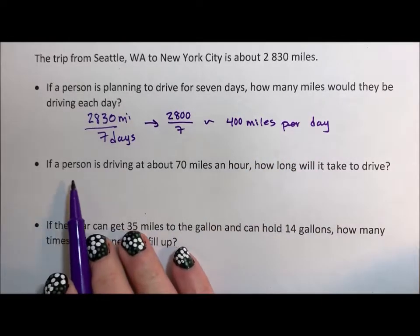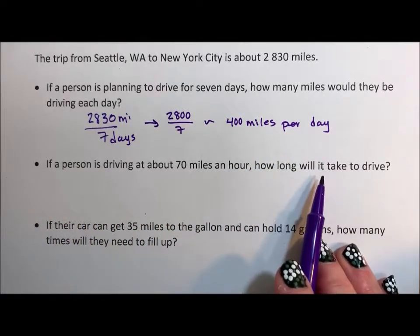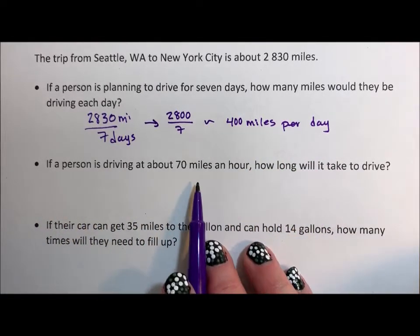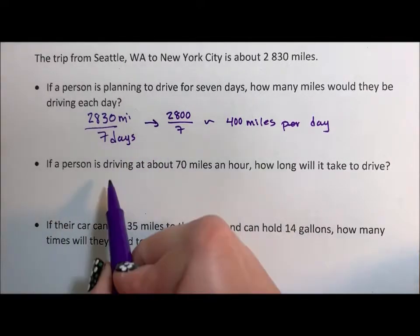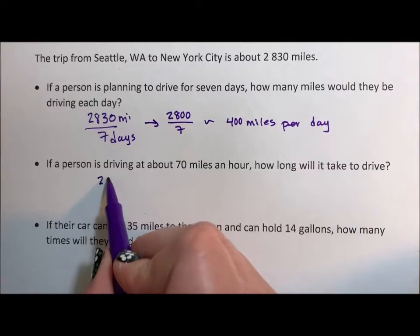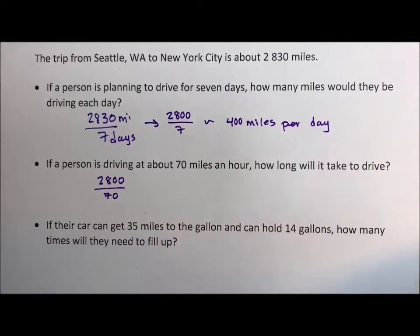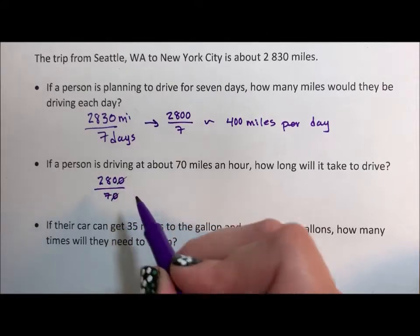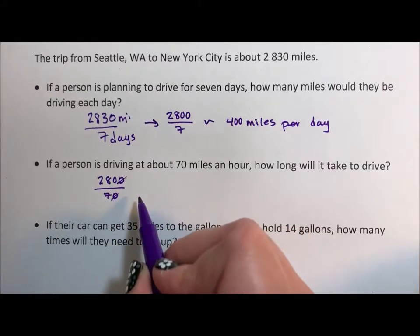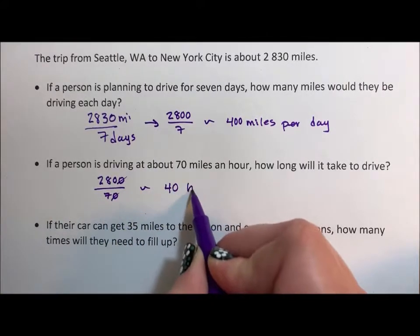If a person is driving about 70 miles an hour, how long will it take to drive? Again, I'm going to keep that number as 2,800 — divide by 70. 70 will go into that number, divide that 10 out, and I'm going to get about 40 hours.